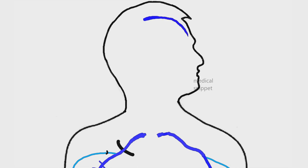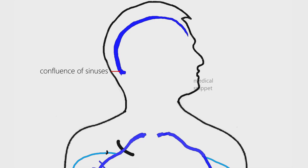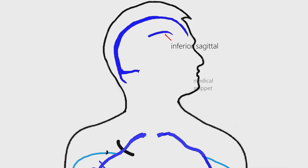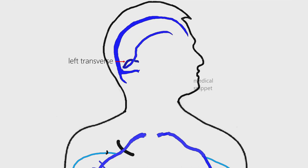The superior sagittal sinus begins at the crista galli and passes backward. On reaching the internal occipital protuberance, it deviates to the right side and forms the confluence of sinuses, continuing as the right transverse sinus. The confluence of sinuses also receives blood from the occipital sinus. The inferior sagittal sinus collects blood from the medial surface of the cerebrum and falx cerebri, emptying into the straight sinus. The straight sinus passes backward and downward, terminating usually into the left transverse sinus, which is connected to the confluence of sinuses via a communicating vein.